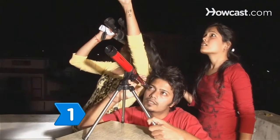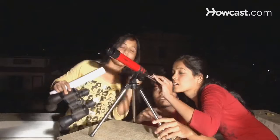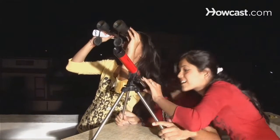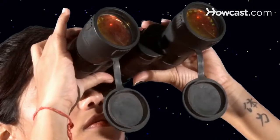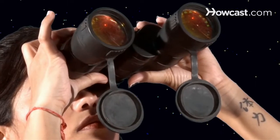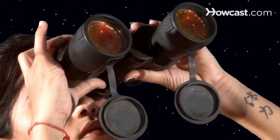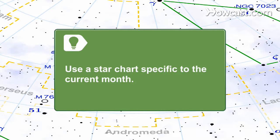Step 1. Choose a clear, starry autumn night to stargaze. For the best possible viewing, a telescope is ideal. But if you don't have access to one, you can get a magnified view of the nighttime sky with a pair of binoculars. Use a star chart specific to the current month to help guide and inform your search for constellations.